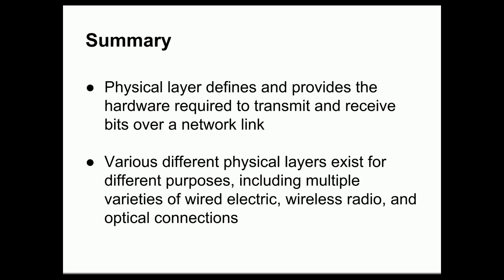All of these different types of physical layers share a common purpose: the physical layer, as part of the OSI model, defines and provides the hardware required to transmit and receive bits over a network link. We have many choices of physical layer — multiple varieties of wired electric, wireless radio, and optical connections — but all of them serve the same purpose: to provide the hardware layer upon which the rest of the networking system will be built.